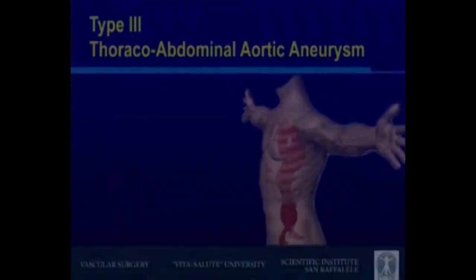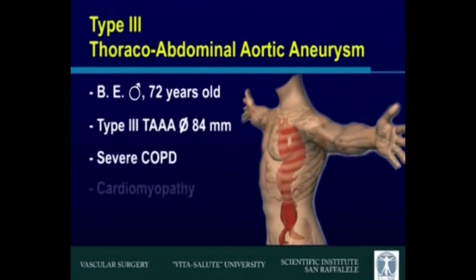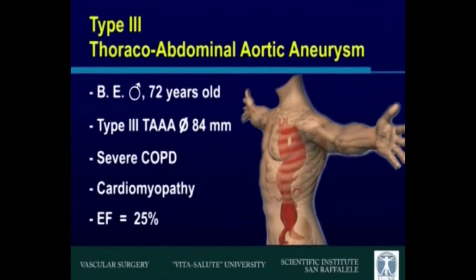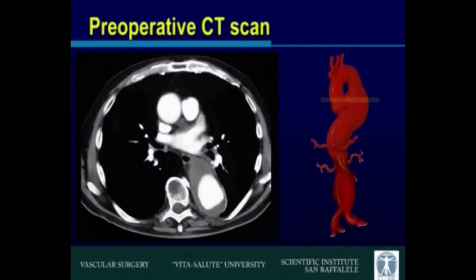We present a case of a large Type 3 thoracoabdominal aneurysm in a 72-year-old gentleman. He was unfit for open surgery due to severe COPD and previous right nephrectomy, associated with a history of coronary disease and myocardial infarction.